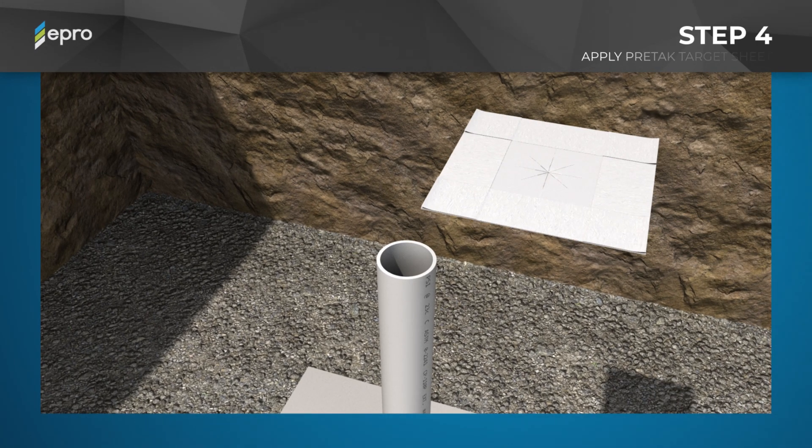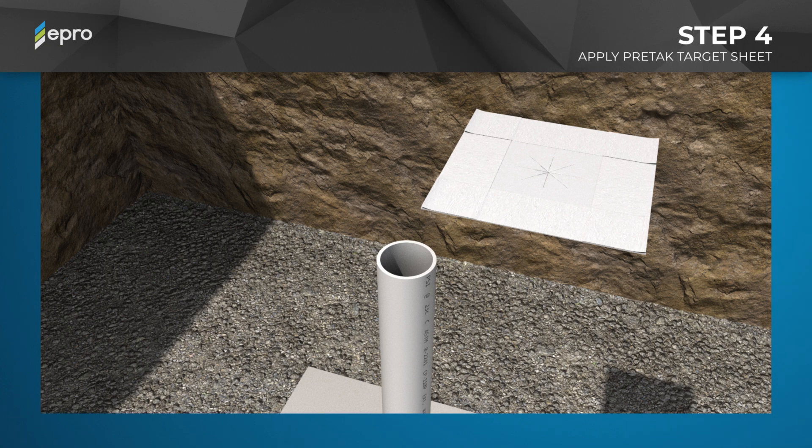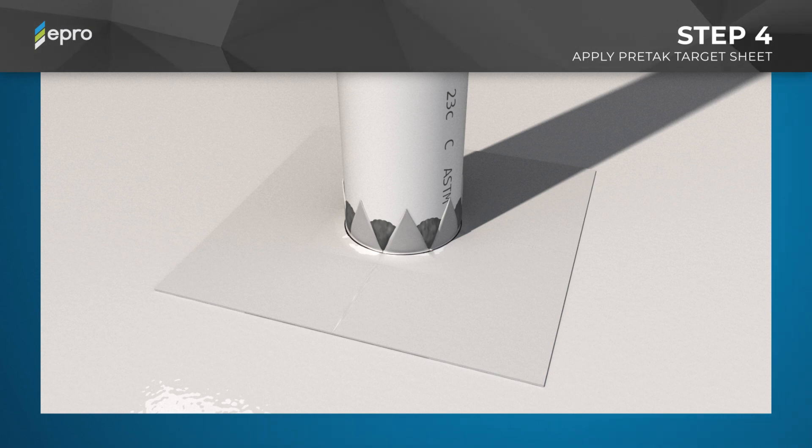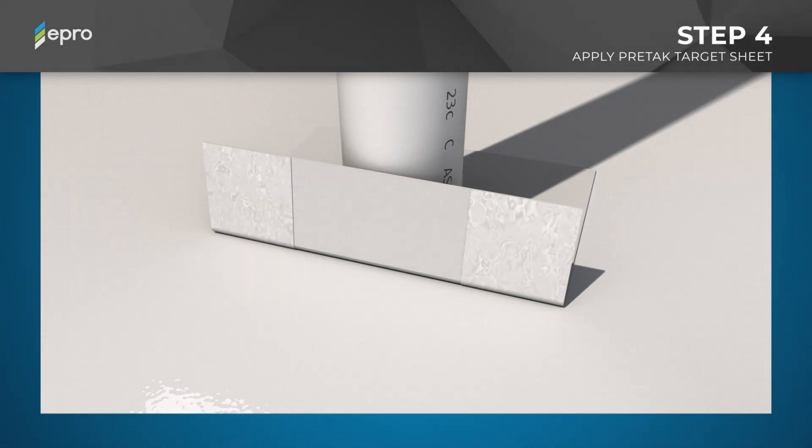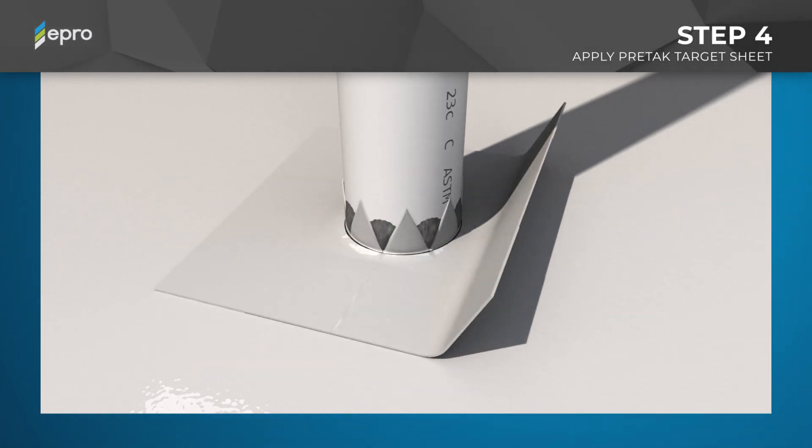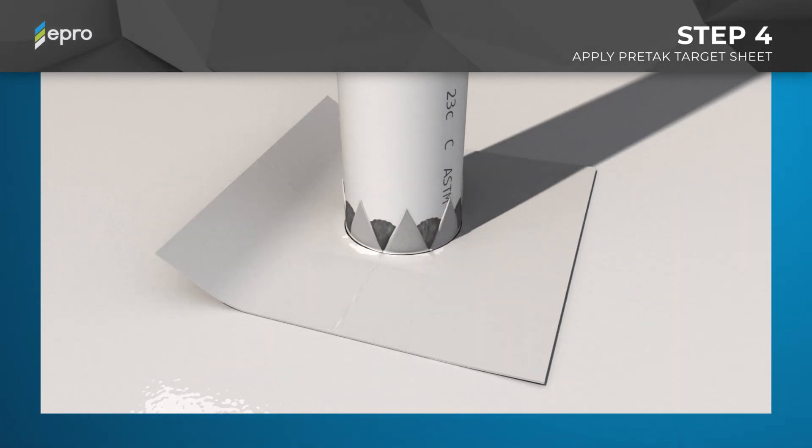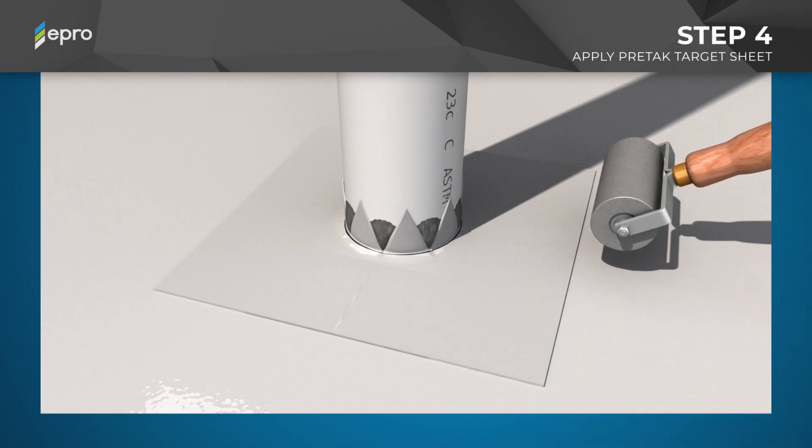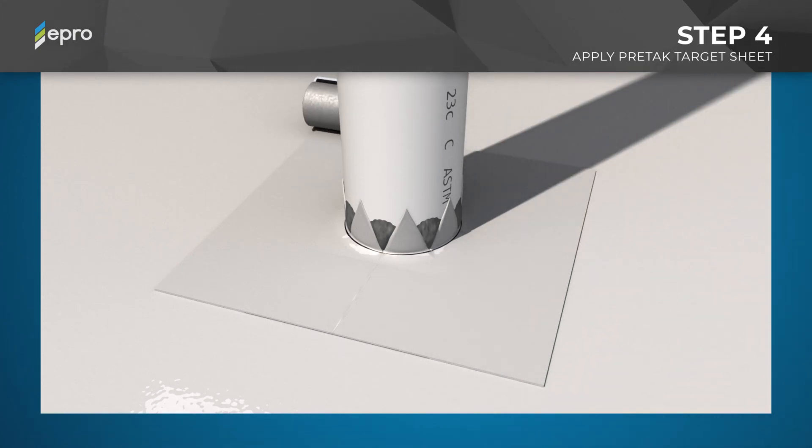Step 4: Apply the PRETAC target sheet onto the penetration. Slide the PRETAC target sheet down over the pipe penetration with the PSA side of the PRETAC facing up and the PRETAPE D side facing down. Then, firmly press the target sheet down around the base of the penetration so that the previously applied E-stop goo becomes visible around the edges of the PRETAC triangles. Next, remove the PRETAPE D release liner on the bottom of the target sheet one side at a time and seal it to the underlying PRETAC base sheet. After removing all of the release liners, use a heavy seam roller to firmly seal along the perimeter edges of the target sheet.